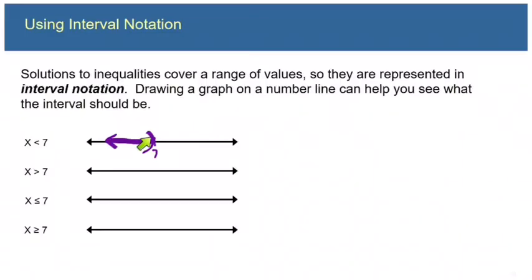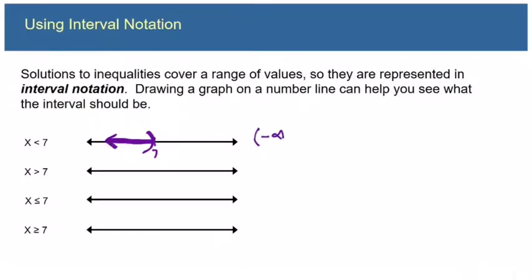For the interval notation, I state the smallest number in the interval on the left and the largest on the right — interval notation always goes left to right. The leftmost number is negative infinity, and the rightmost is seven. Since seven is not included, I put a parenthesis: negative infinity to seven.